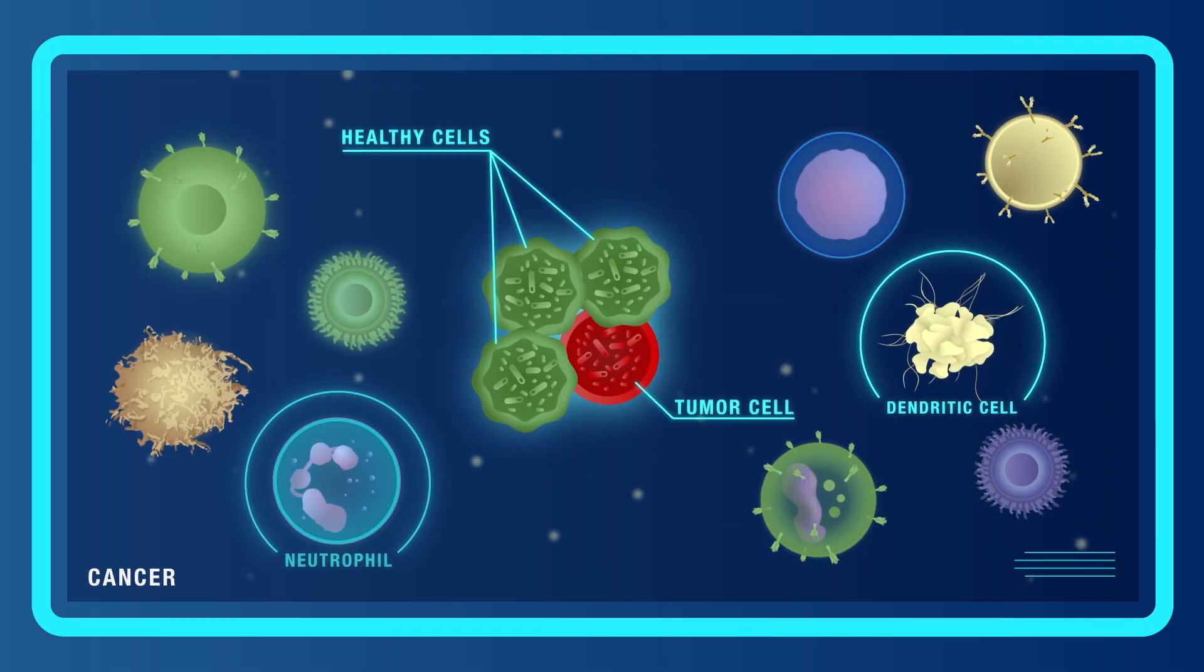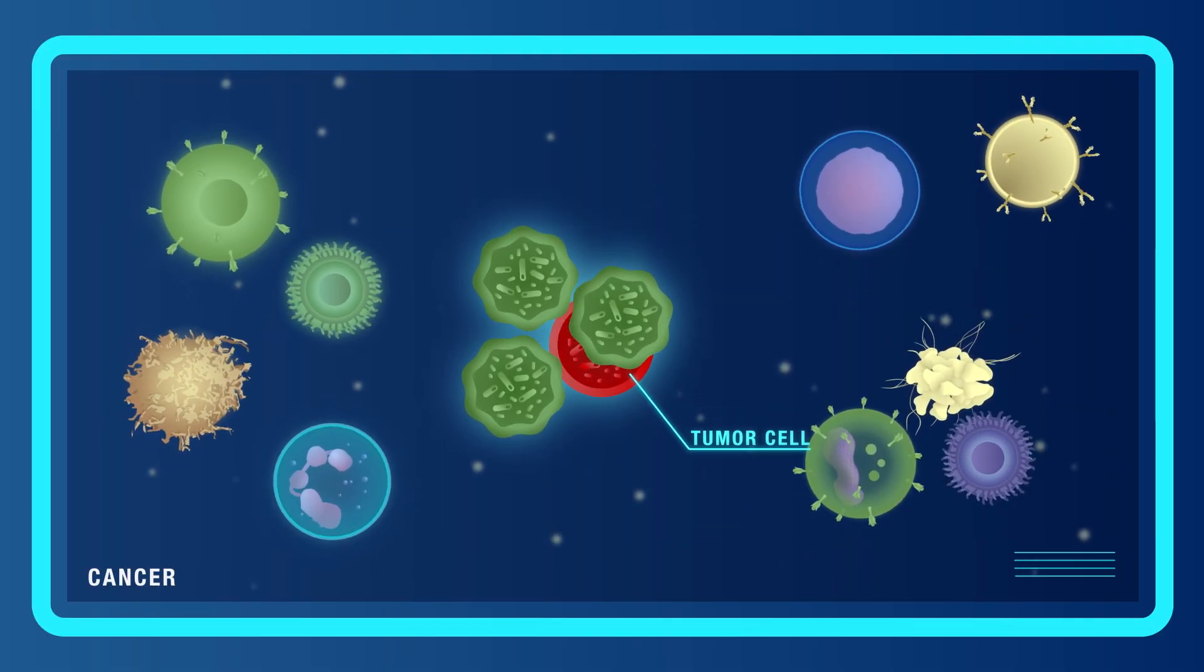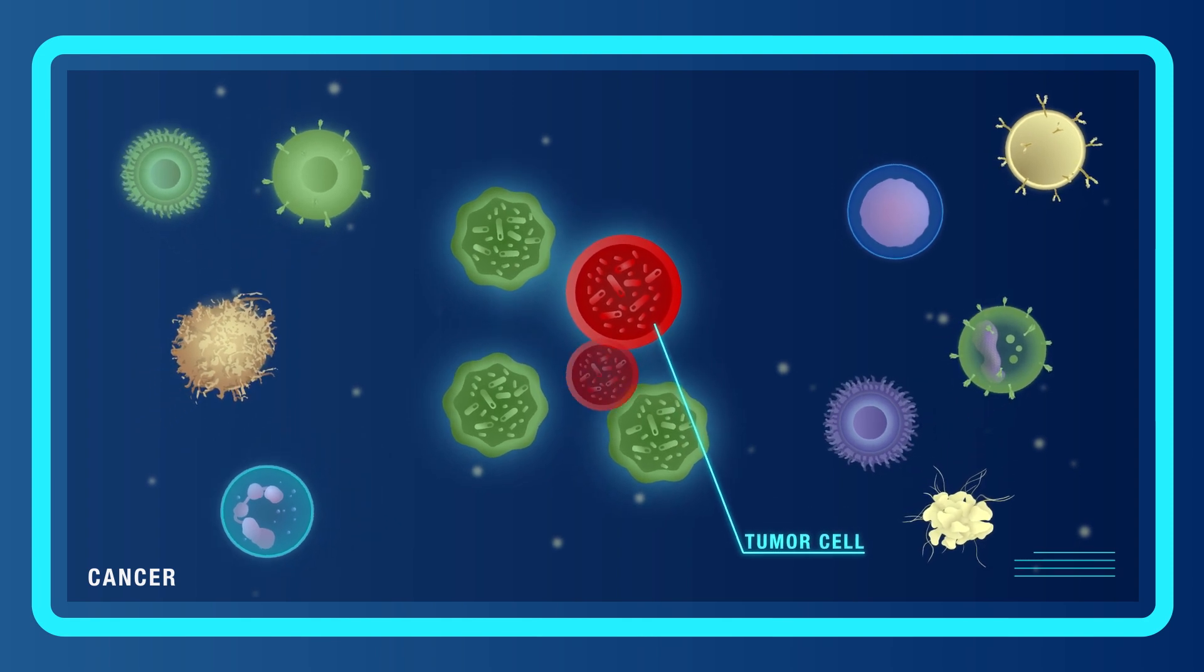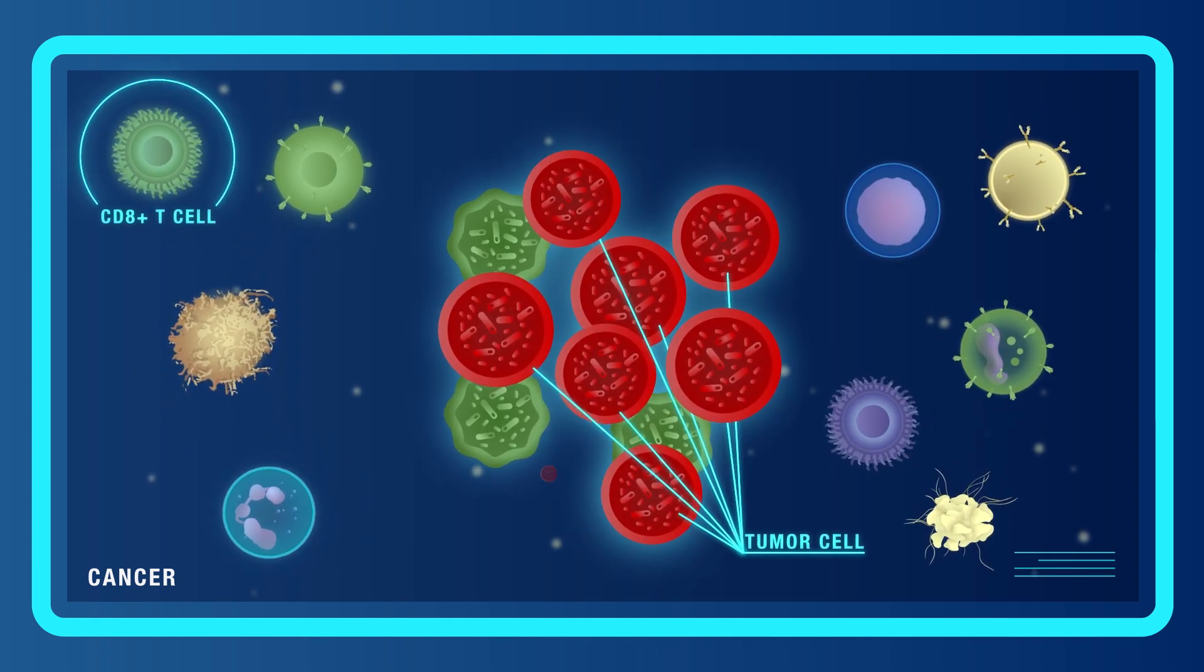However, cancer cells can learn to evade detection from these finely-tuned systems, allowing them to grow unchecked and turn into tumors.